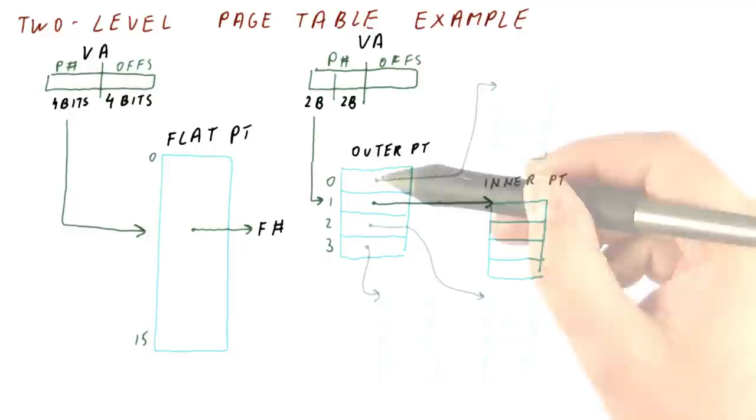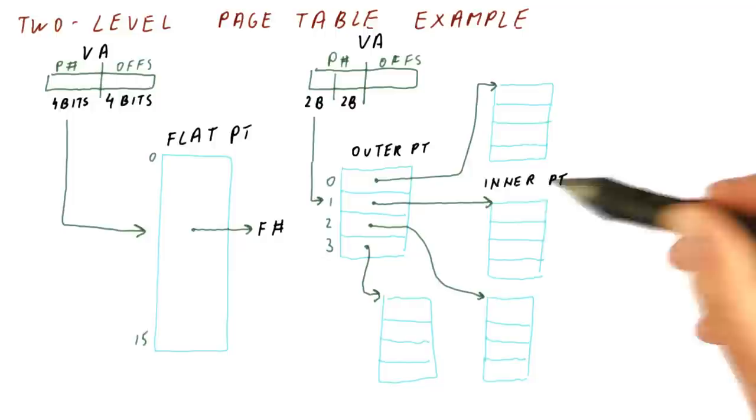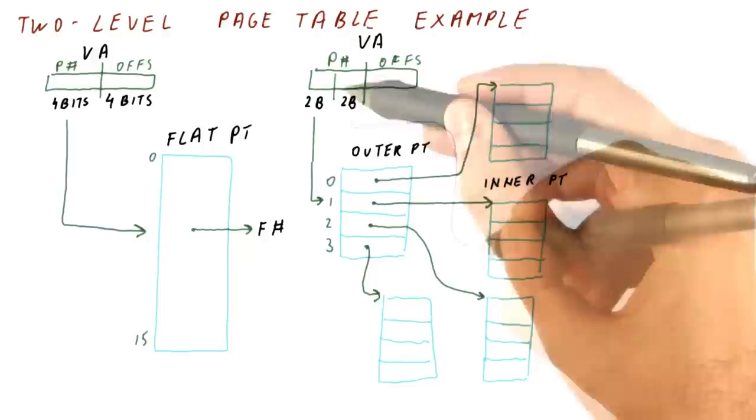So in total, we have four inner page tables. Once we find the pointer to the correct one, we can use the inner part of the page number to tell us which entry to use, and that gives us our frame number.